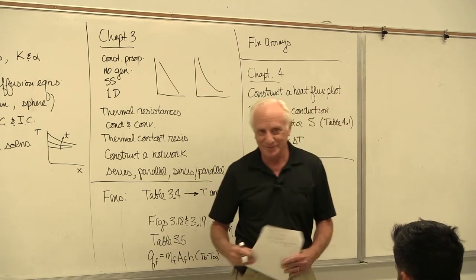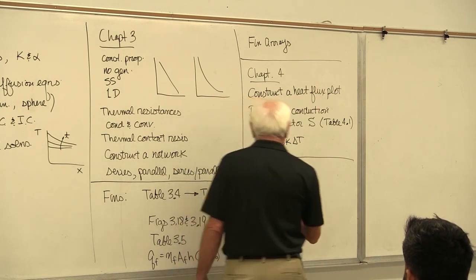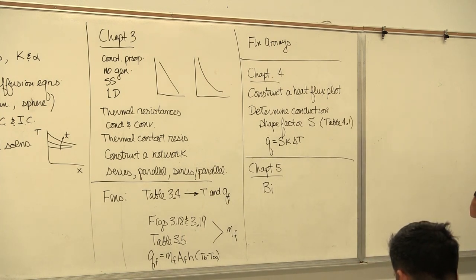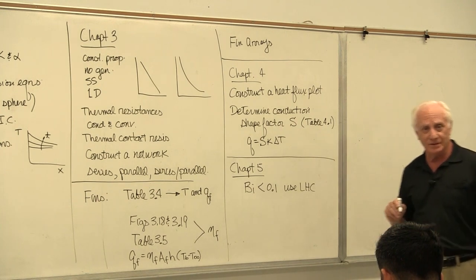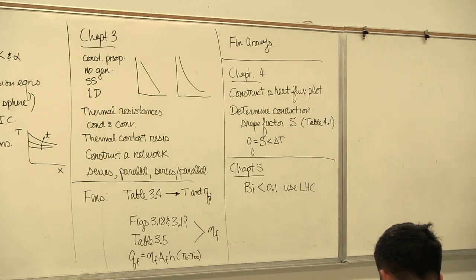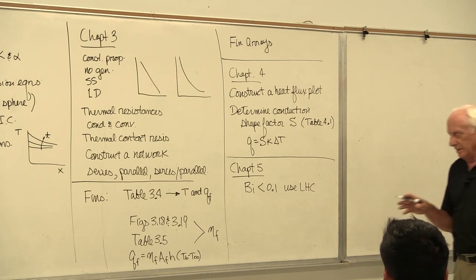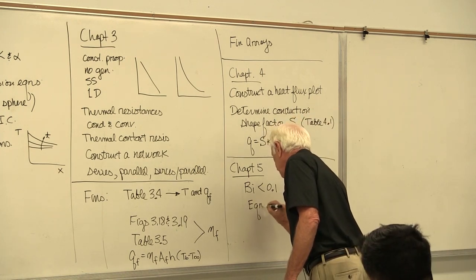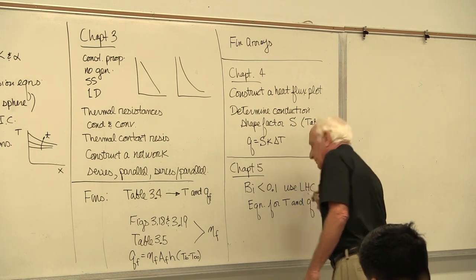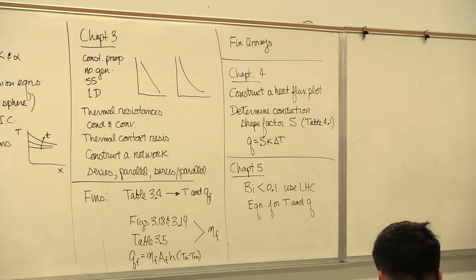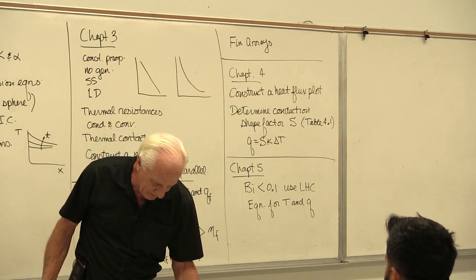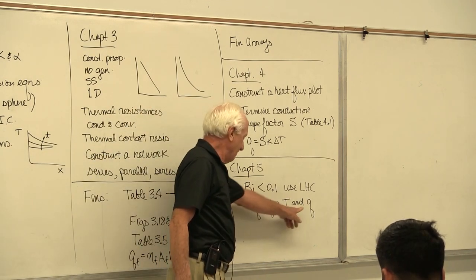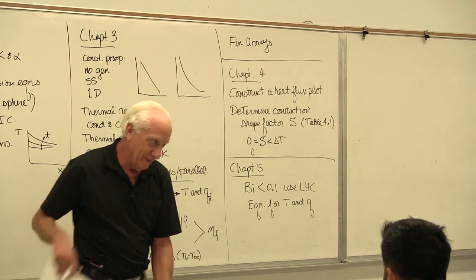Okay, Chapter 5, interesting one. That's our transient chapter. We know what the first step is: the Biot number. If the Biot number is less than one-tenth, use lumped heat capacity. Don't make life difficult and use the more lengthy equations. Take this easy way out. Bi less than one-tenth, use lumped heat capacity. There's an equation for that—for T and an equation for Q. So two important equations. Check the Biot number; less than one-tenth, you want to find temperature, use one equation. You want to find Q, use the other equation. Equation 5-6 and 5-8B.